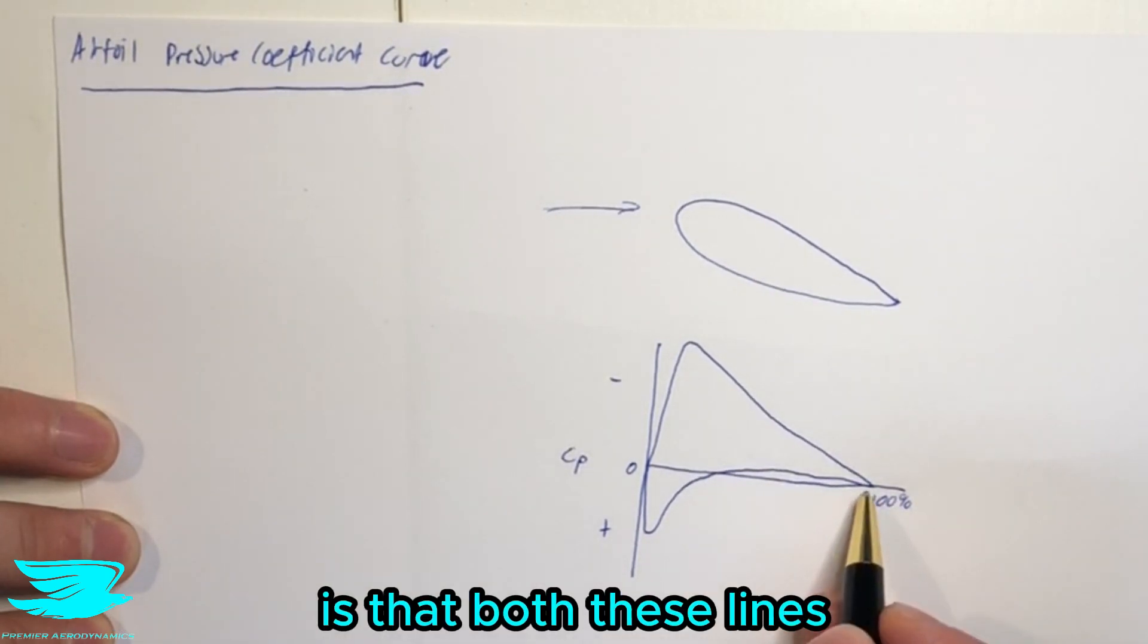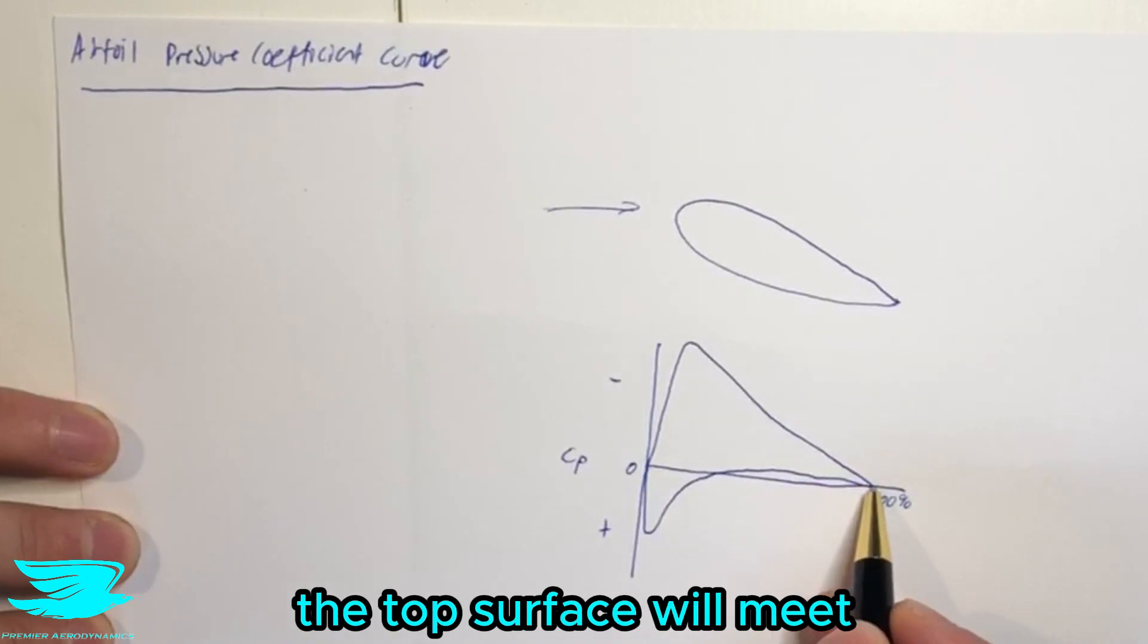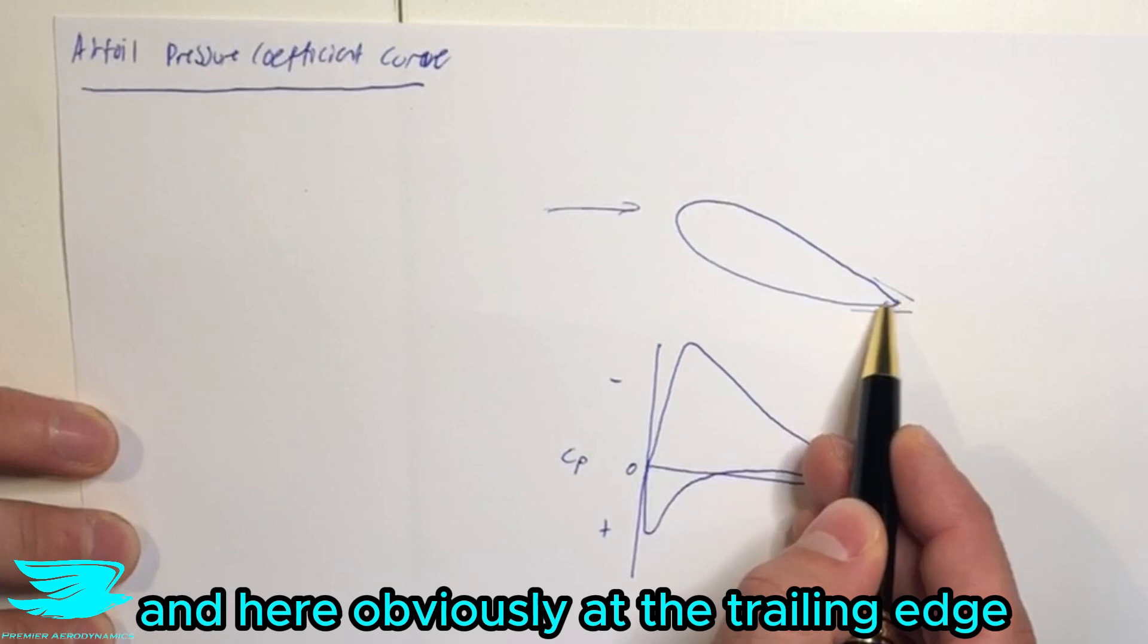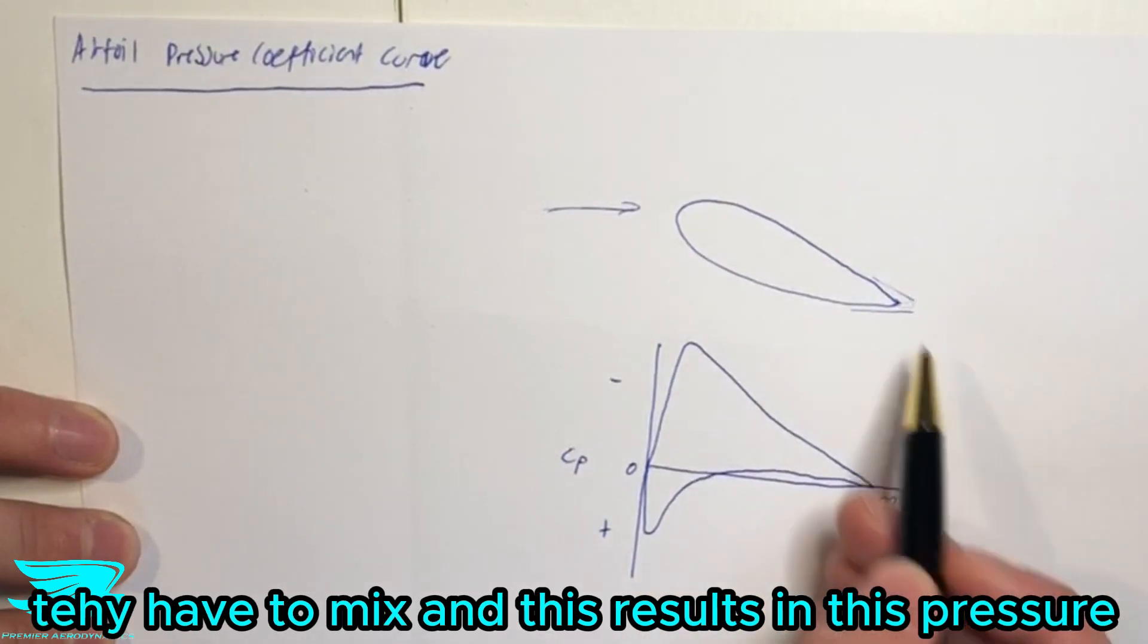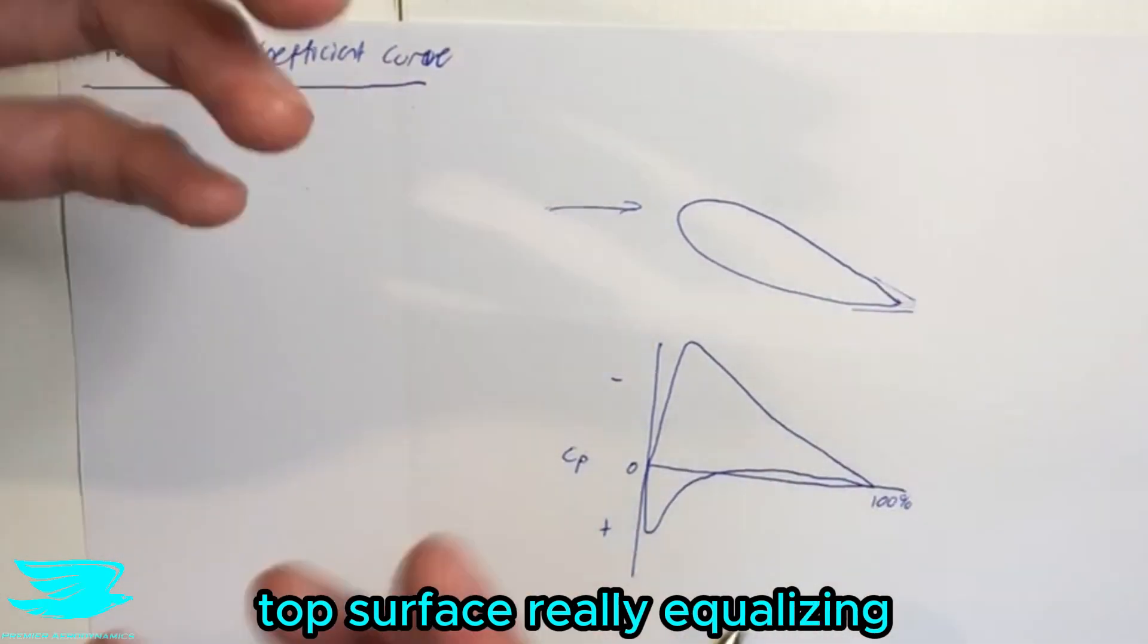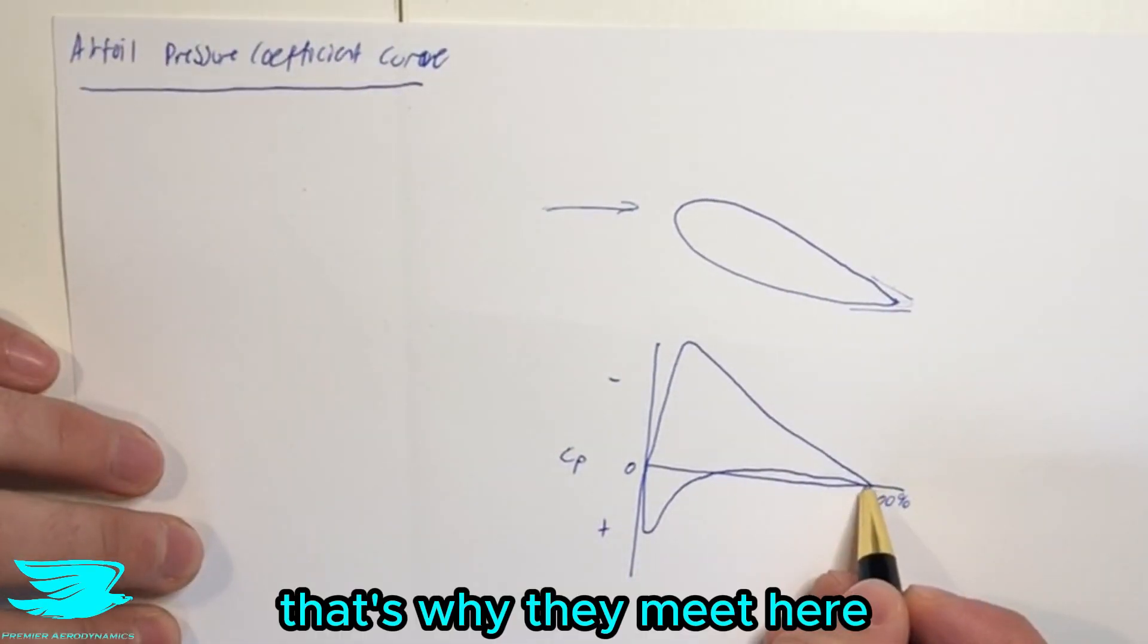Now, the important point to note here is that both these lines, for the bottom surface and the top surface, will meet. And this is because as the flow comes along here and here, obviously at the trailing edge, they have to mix. And this results in this pressure from the bottom surface and the pressure from the top surface really equalizing. So that's why they meet here.